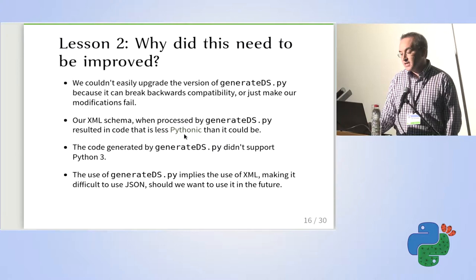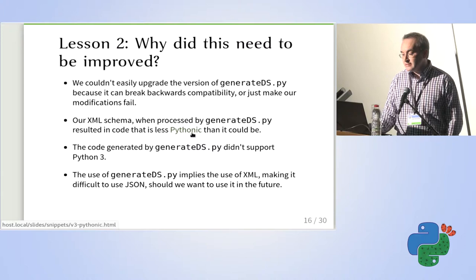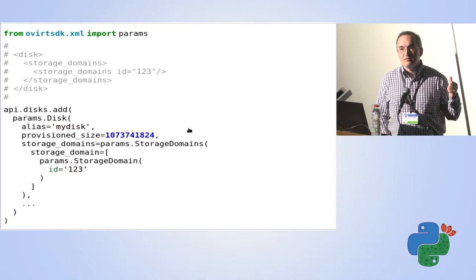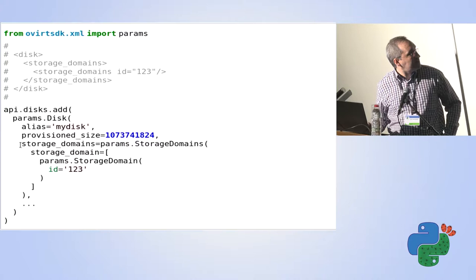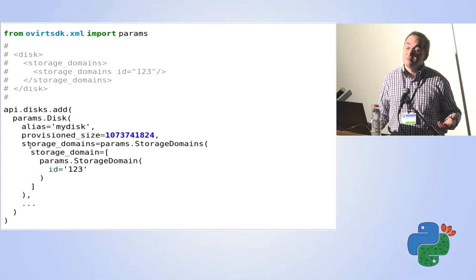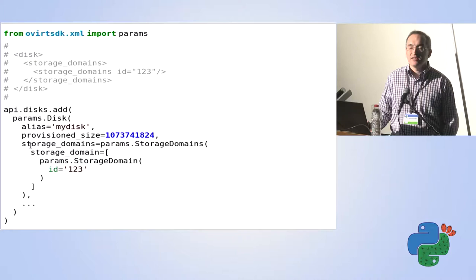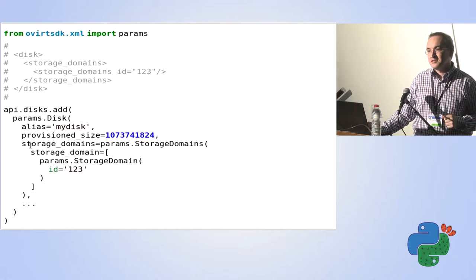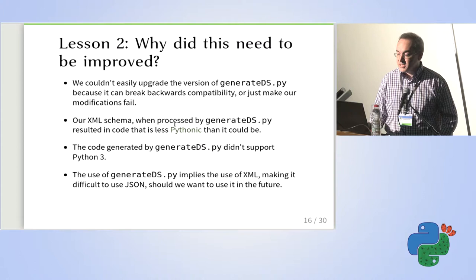Another reason was that the XML schema we used was not exactly Pythonic, and the same happened with the generated code. Just look at this code — this is what was needed to do something as simple as creating a new disk. In order to create a disk you provide an alias, a provisioned size, and a set of storage domains. In theory that should be just a Python list, but because of how we generated the code from XML schema, it had to be an object containing another object containing a list. Really not nice.